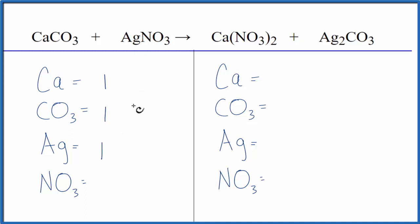We have one silver, and then again we have a polyatomic ion, NO3 — it's the nitrate ion. We have one here, and then we have several here. We can just count it as one item, so we have one of these here.